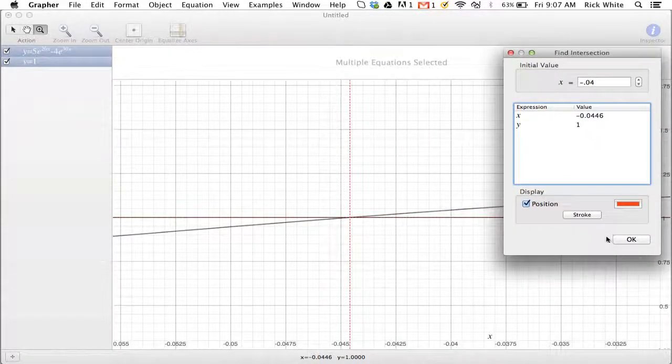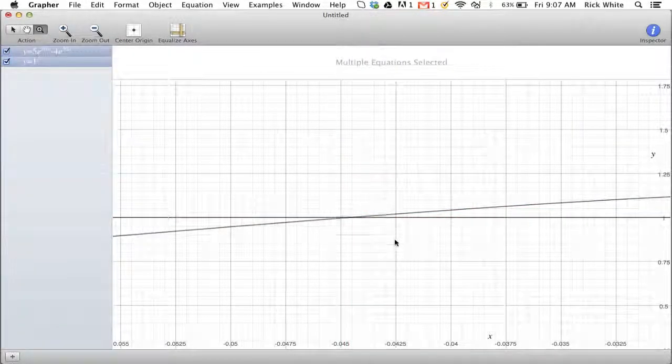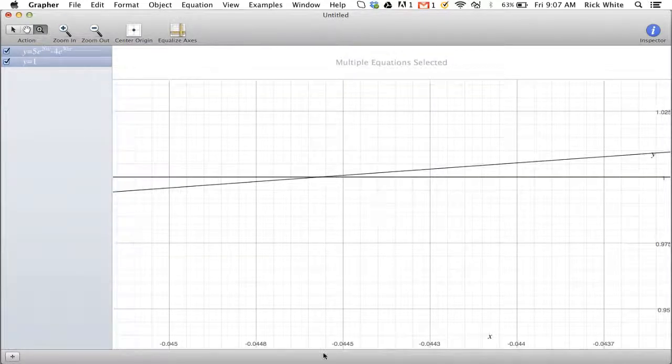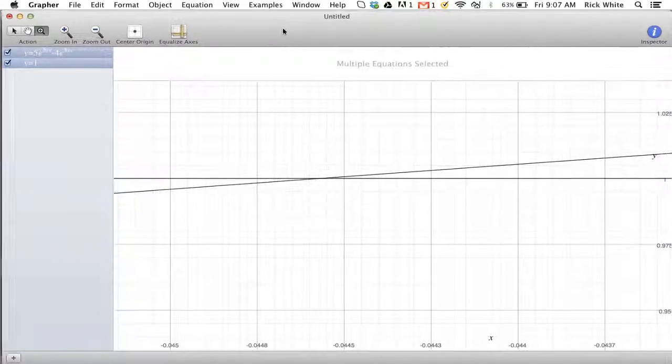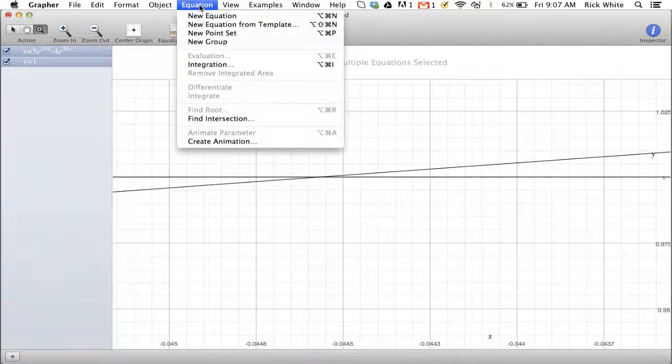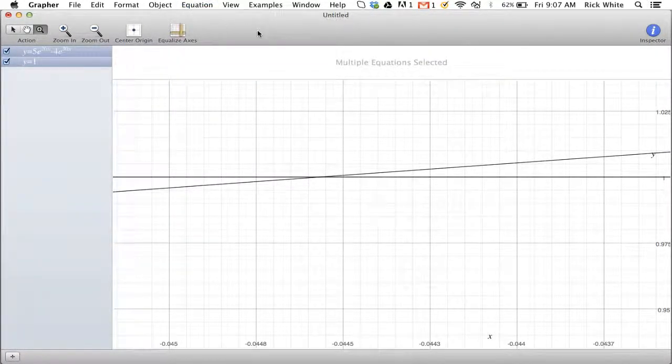Or if that still doesn't work, you could just go in and zoom in more and more until you can see at least two or three decimal points what you're dealing with without actually doing the intersect portion.